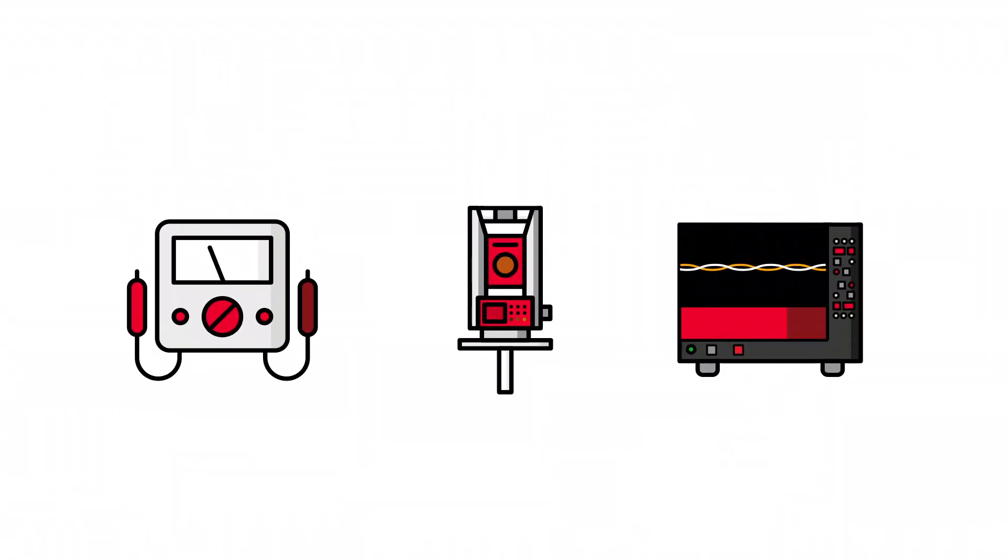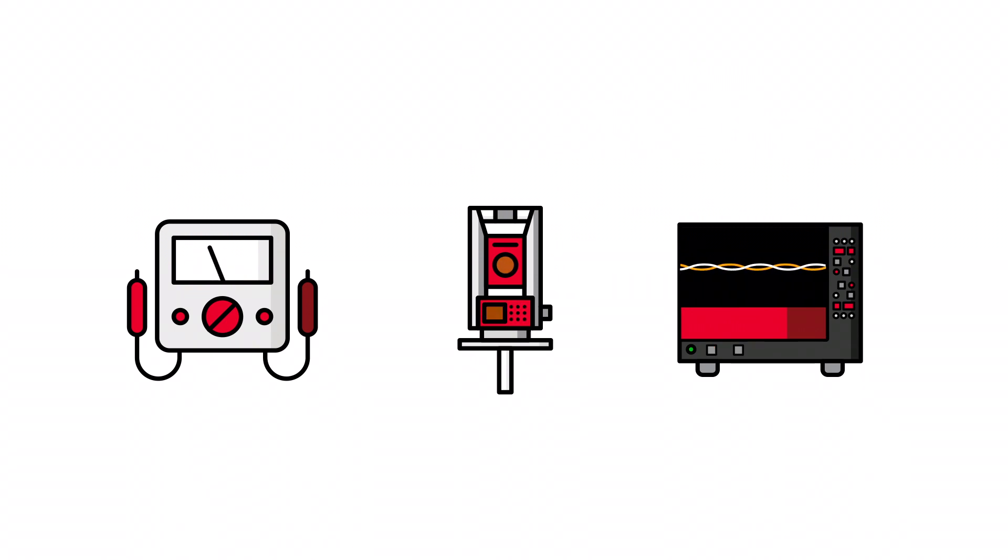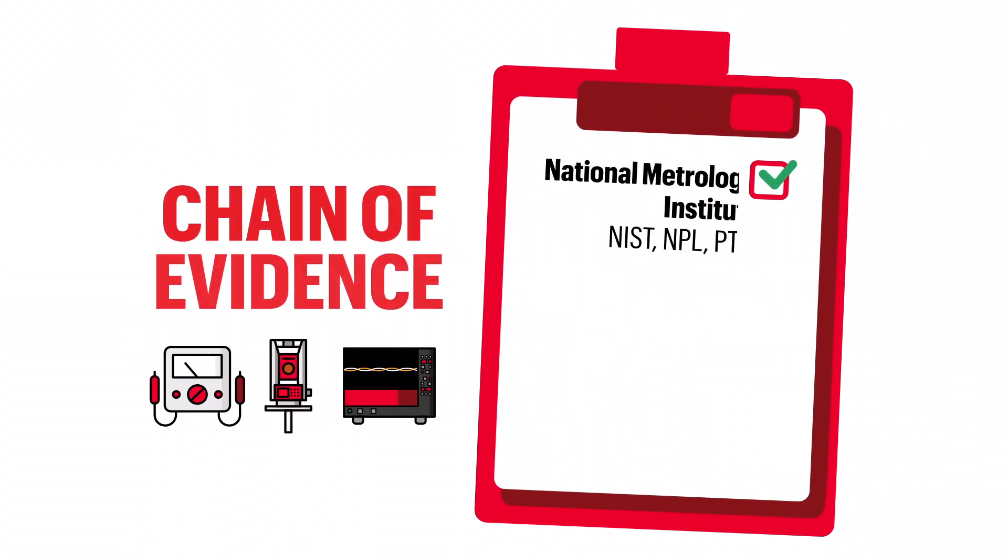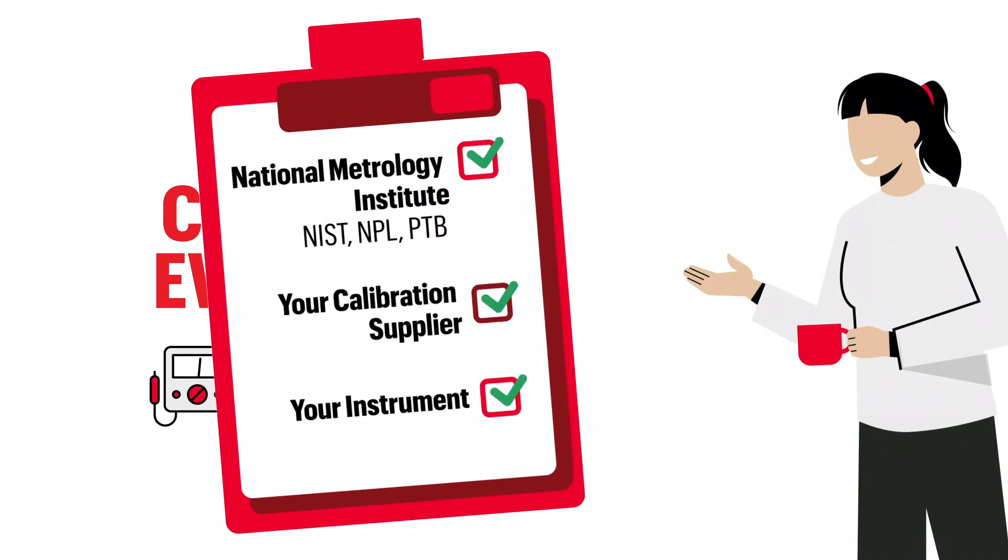For instruments, traceability represents the credibility of measurements. Is your supplier's lab equipment maintained and calibrated in a fashion traceable to a recognized national reference? Every supplier should provide the chain of evidence to prove this, but not all do.